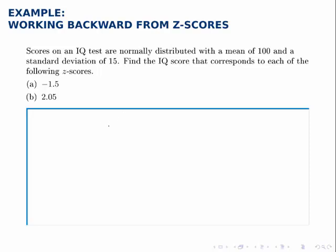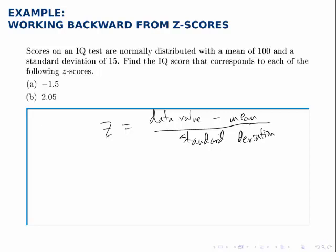Remember that a z-score is simply a given data value minus the mean divided by the standard deviation. Here we're given the z-score, the mean, and the standard deviation and asked to solve for the data value.